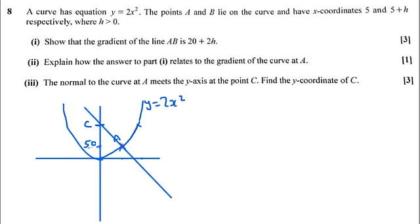Well, we know from part 1 and what we've said in part 2 that at A, the gradient is 20. So at A, the gradient of the tangent is 20. And we also know that the coordinate is (5, 50).